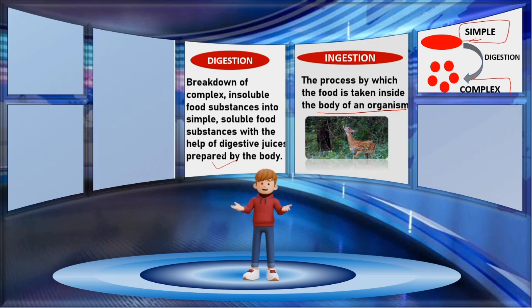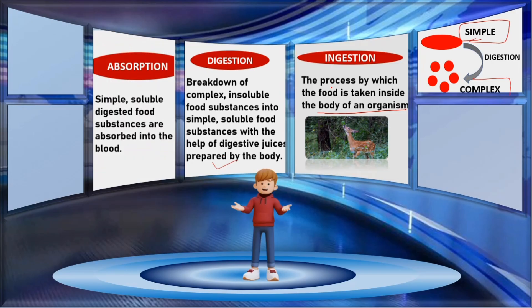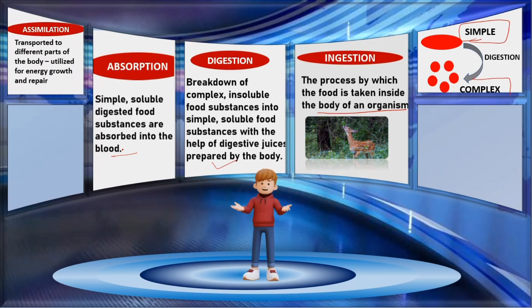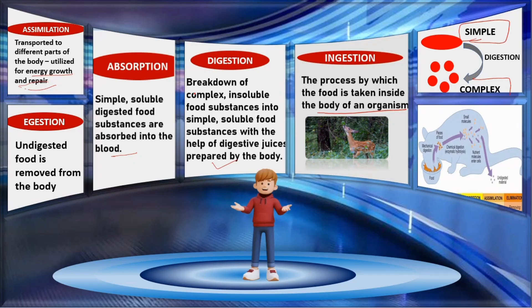The third step is absorption. Absorption is the process in which the simple soluble digested food substances are absorbed into the blood. These simple soluble absorbed food substances are then transported to different parts of the body where they are utilized for energy, growth and repair — this is called assimilation. After assimilation, the part of food which remains undigested and unabsorbed cannot be utilized by the body, so the process in which this undigested food is removed from the body is called egestion.